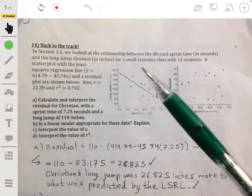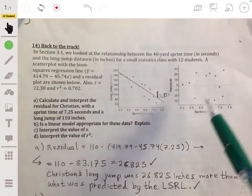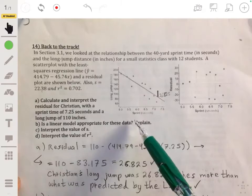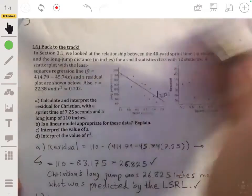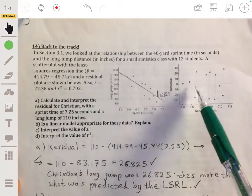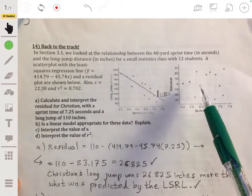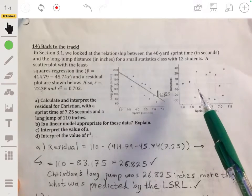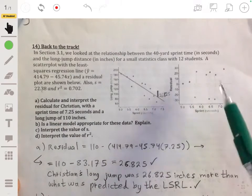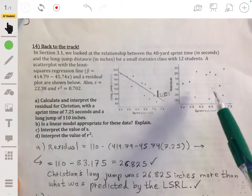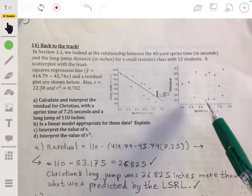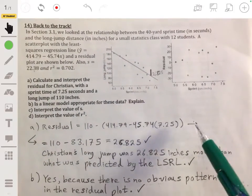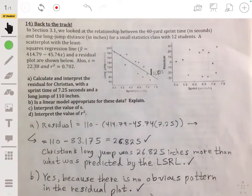So part B: Is a linear model appropriate for these data? For that, remember we look at the residual plot. You want to look at the residual plot to see if there's no obvious pattern shown. If there's no obvious pattern shown, then it means that we're good to use a linear model for our data. And if you look here, it seems like there's no obvious pattern. It's just random scatter, so then it'll be okay to use a linear model for this data because there's no obvious pattern in the residual plot.